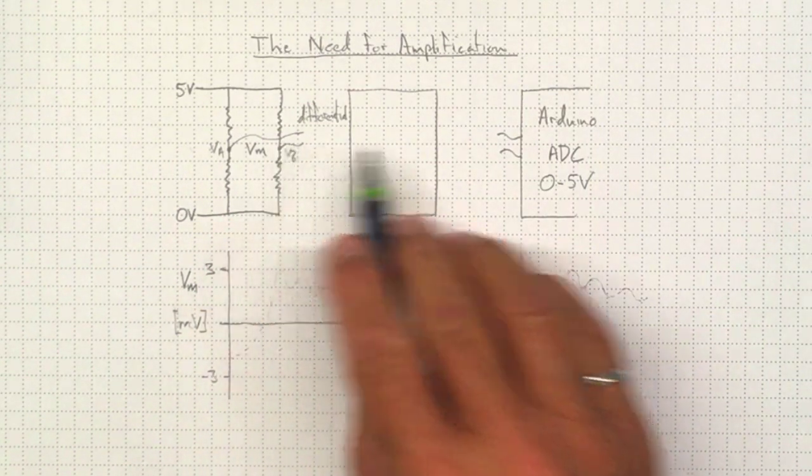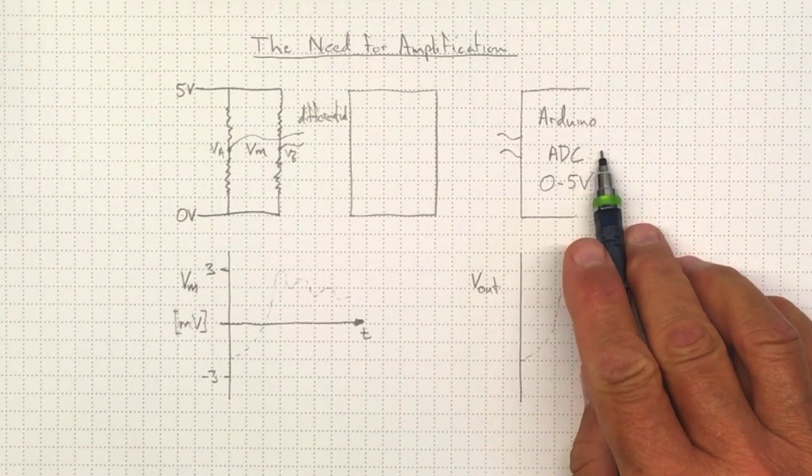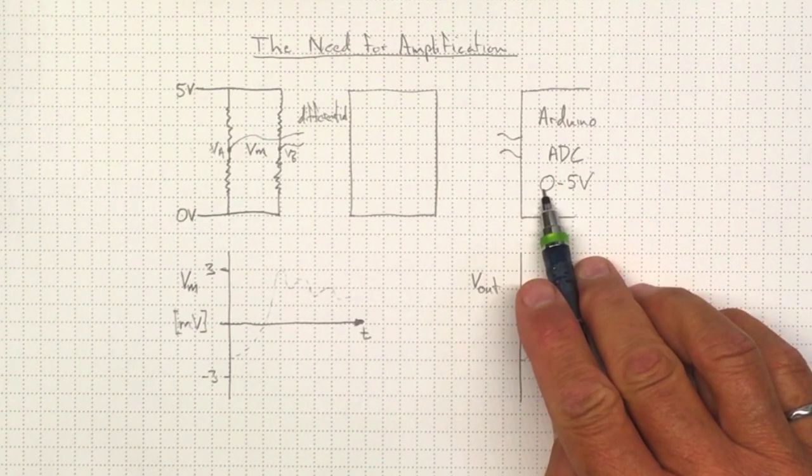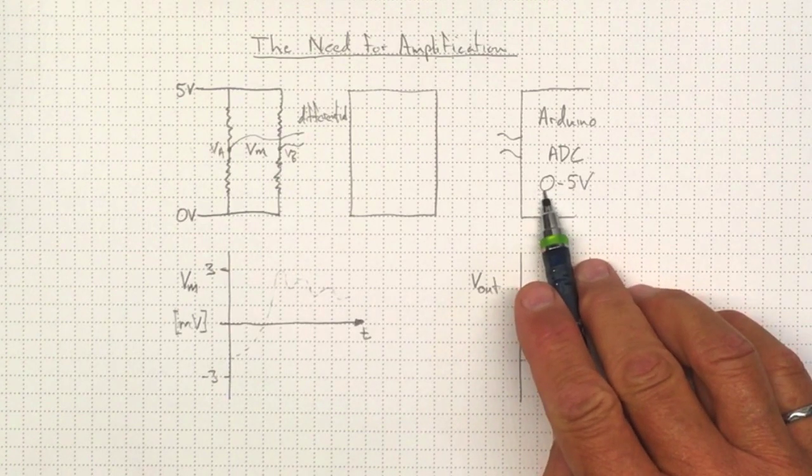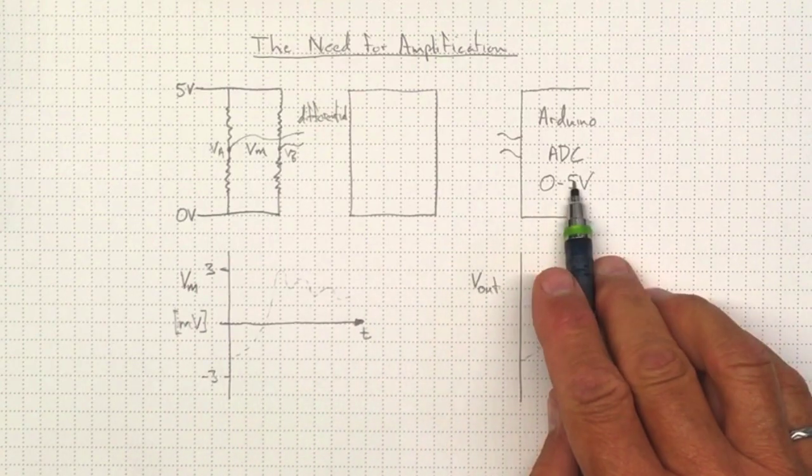Now, at the other end, we'd like to be able to record what's going on on our Arduino. And it doesn't do differential voltages. It only does absolute voltages from 0 up to 5 volts. So we can't read a negative voltage with it.